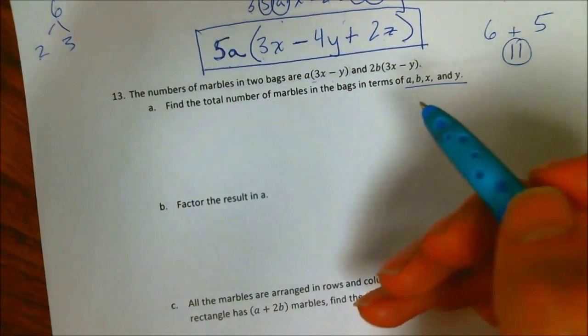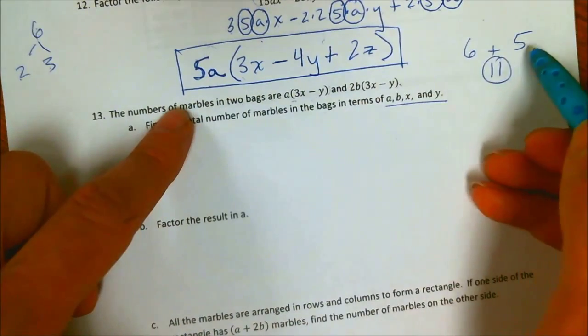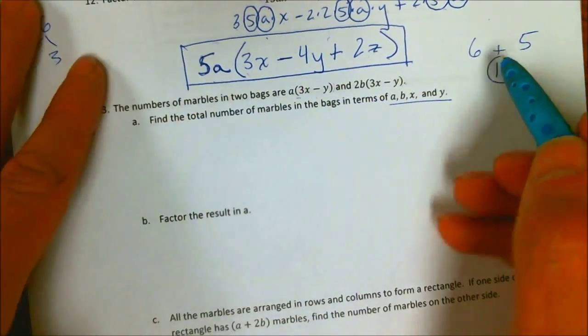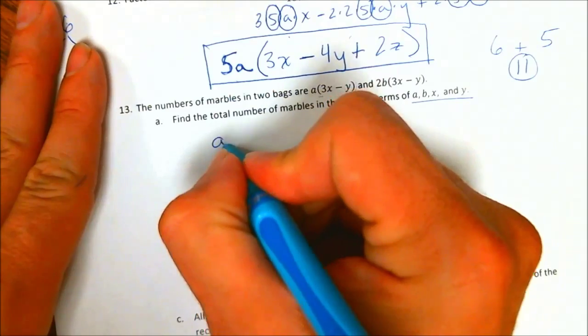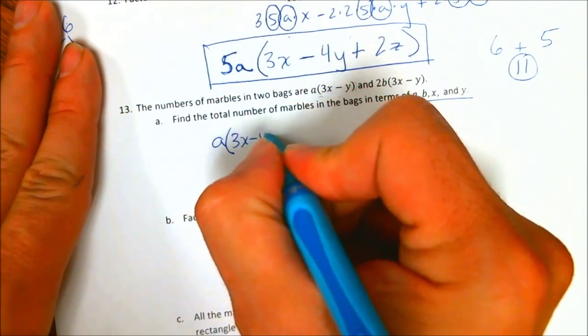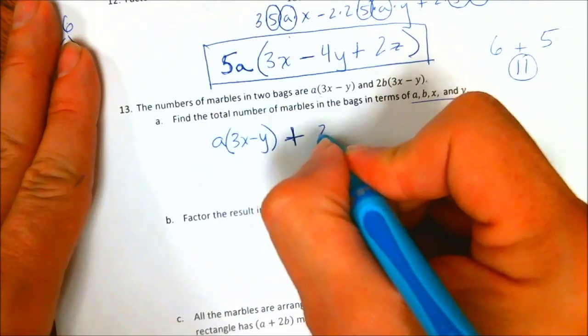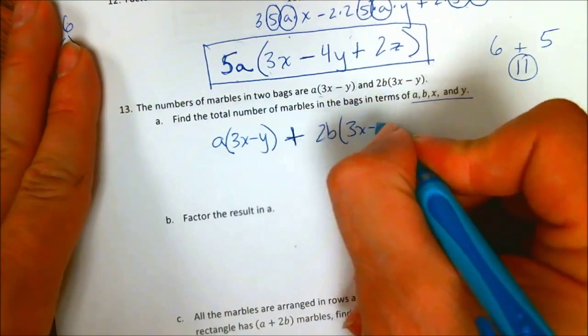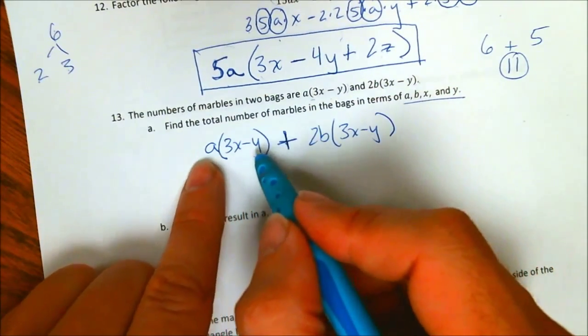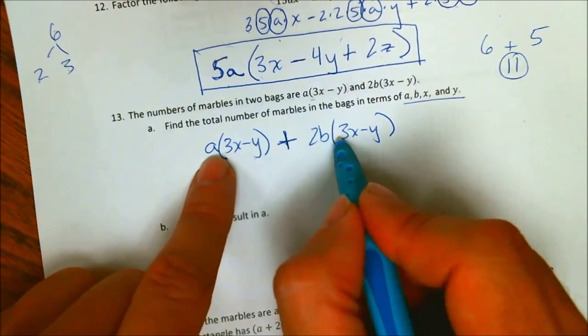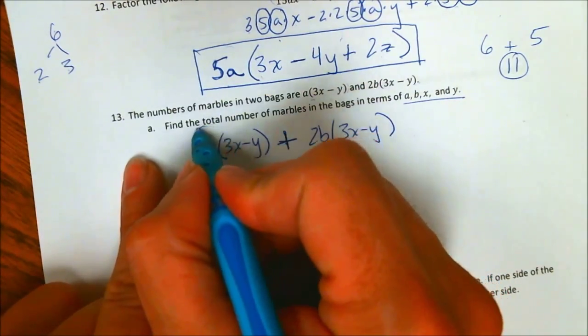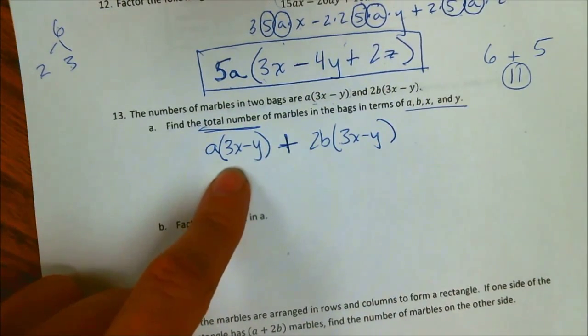Well, if I want to find the total number of marbles in two different bags, I add them together. That means I have to do A times 3x minus y plus 2B times 3x minus y. There, I added the number of marbles in bag A to the number of marbles in bag B to get the total number of marbles in the bags. That's it. It's that simple.